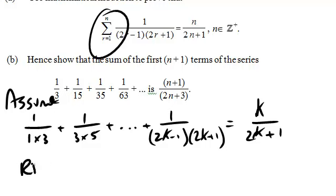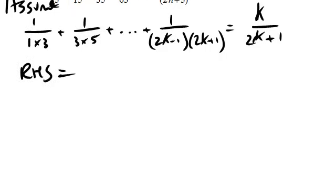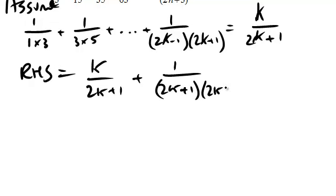I then add the next term to both sides. So the right hand side is going to become what I assumed plus the next term, which is when k becomes k plus 1. So 2k minus 1 becomes 2k plus 1 and this becomes 2k plus 3.